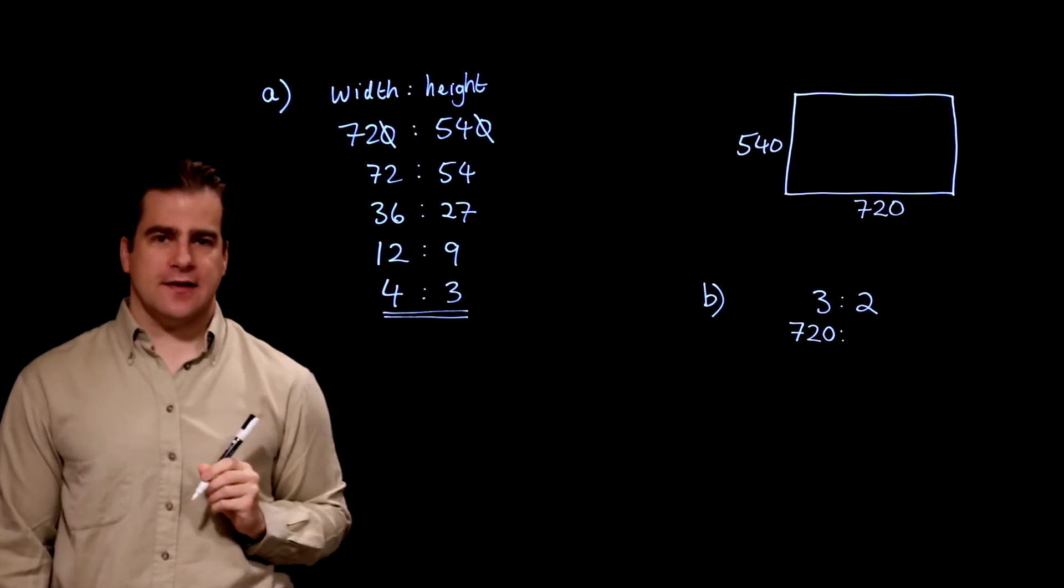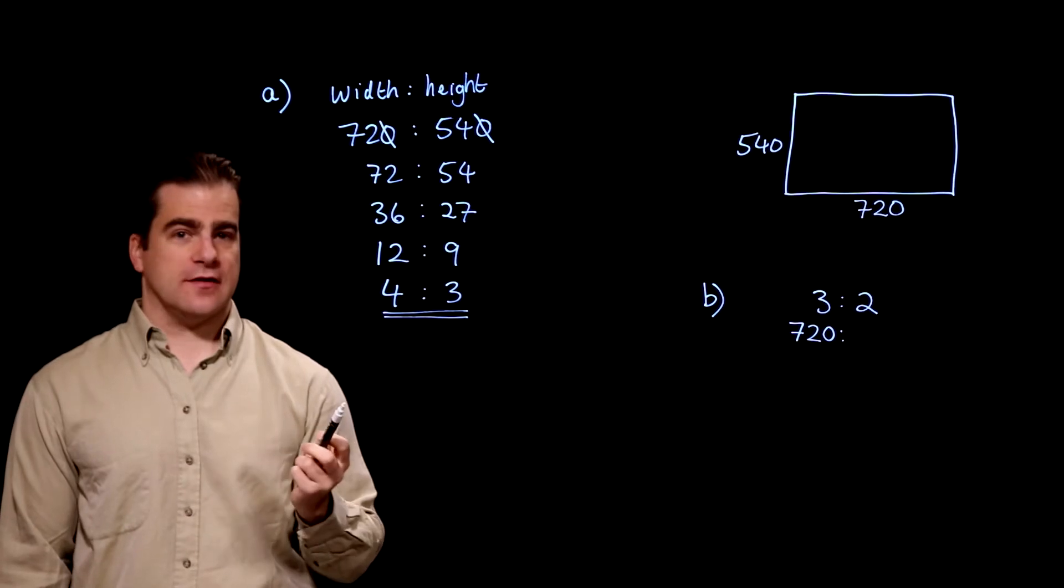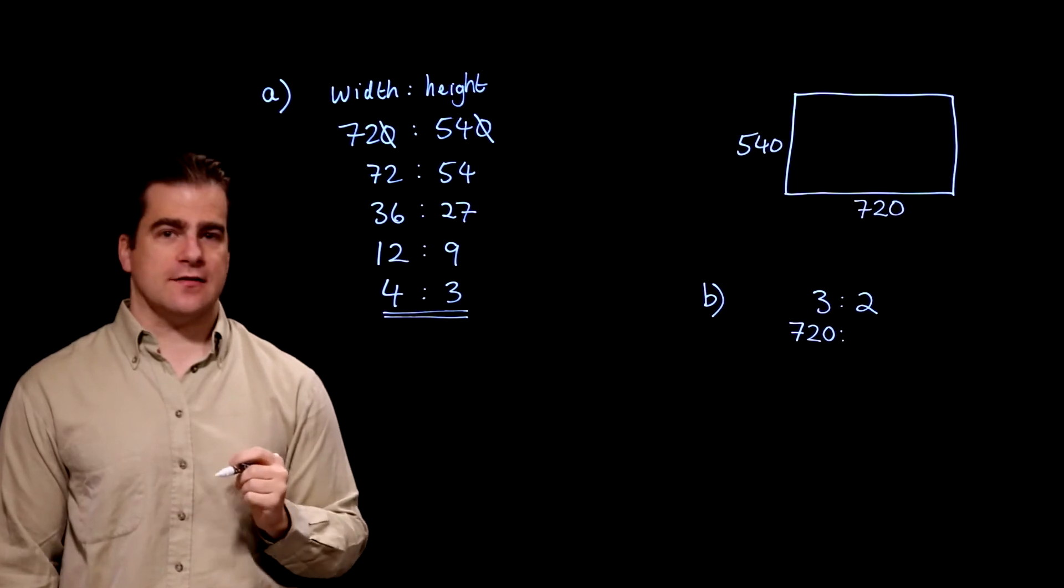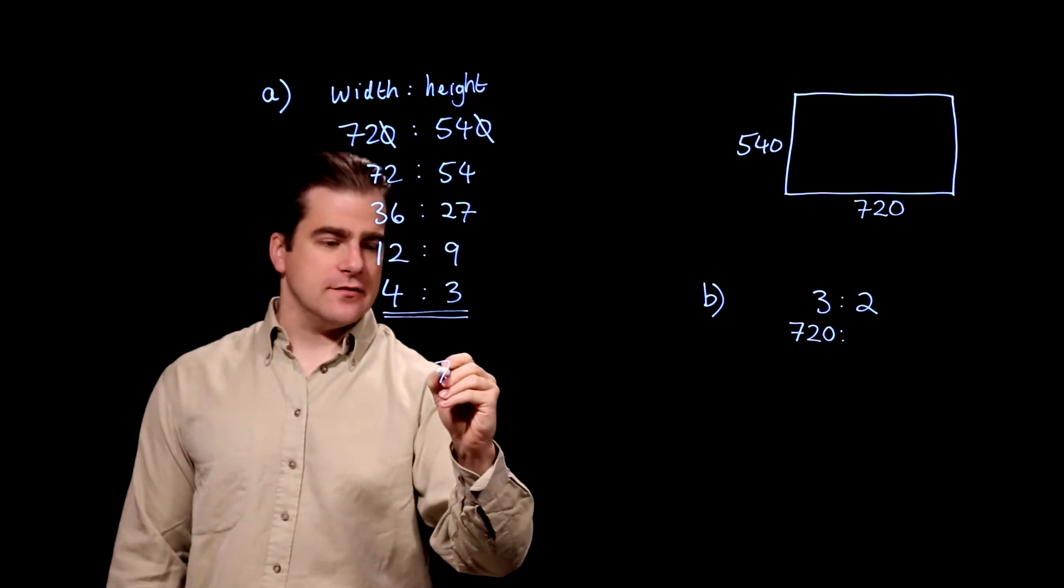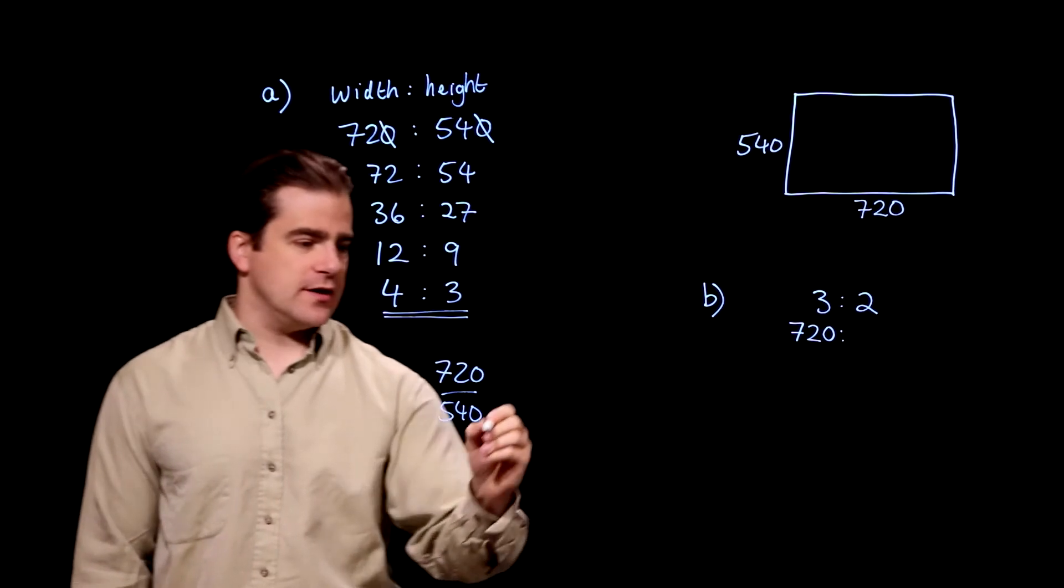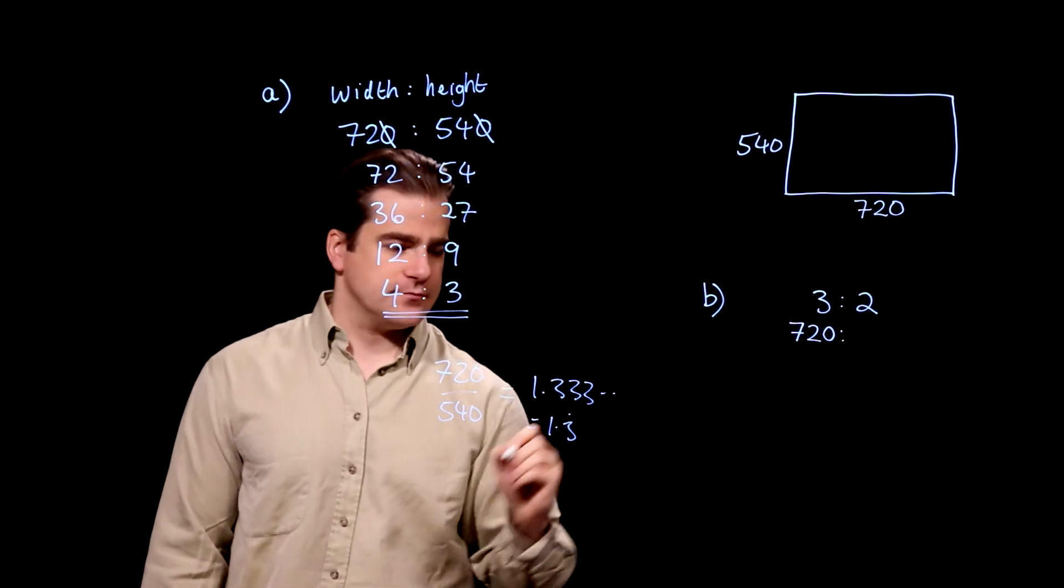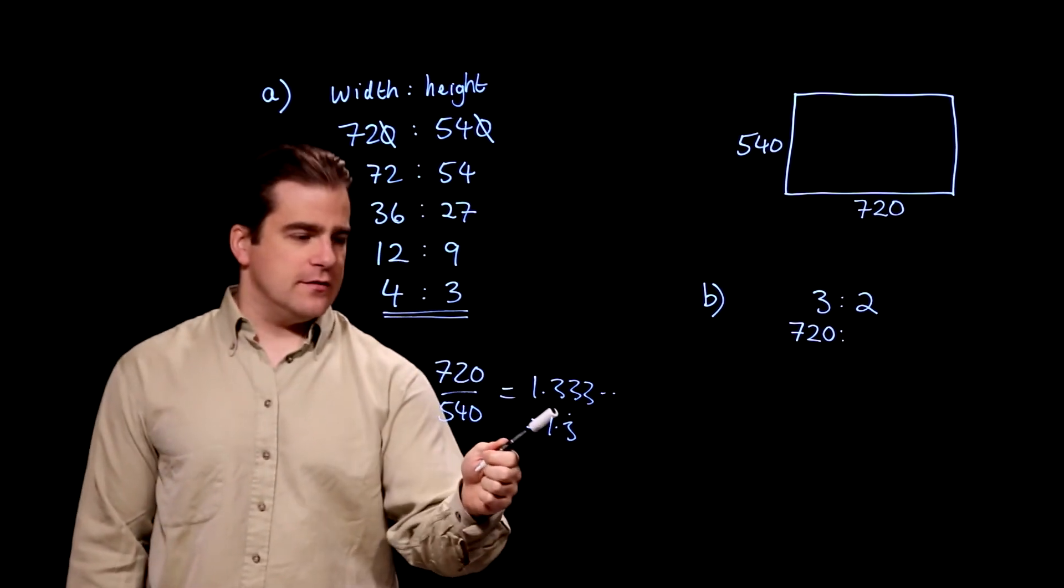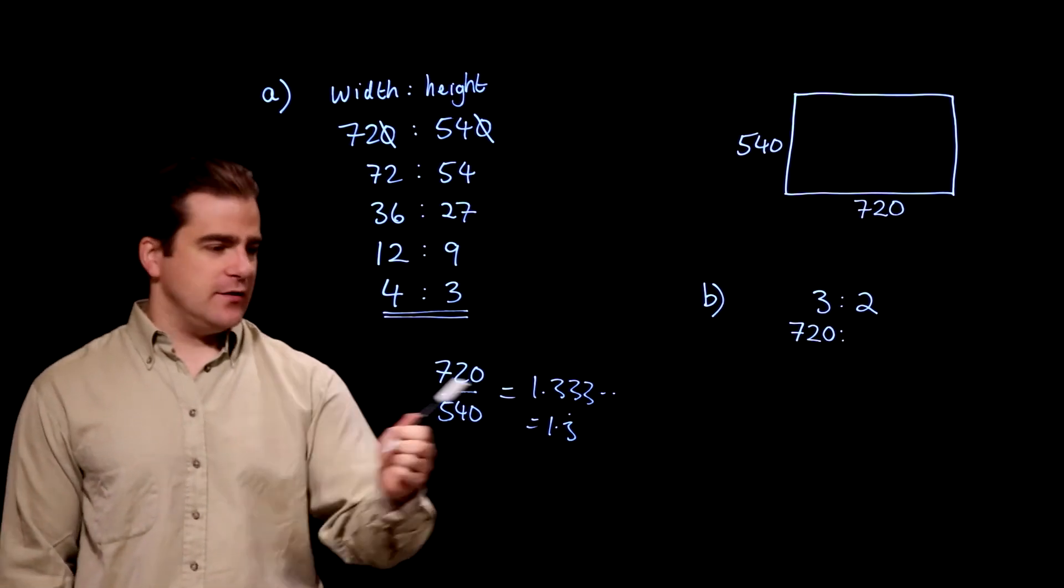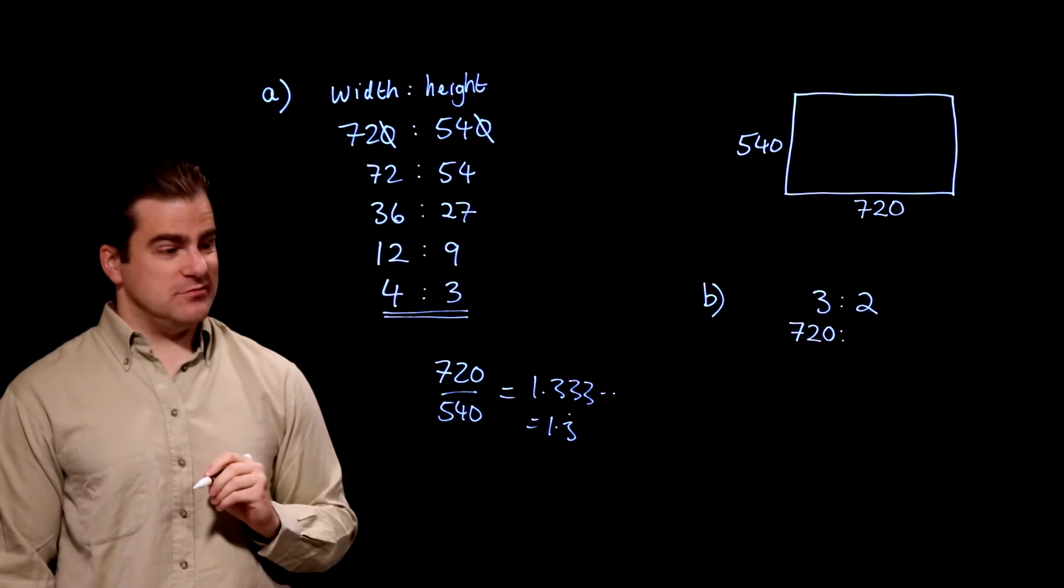Now, this is a calculator paper. So it might be tempting, and you can try this if you want, to simply divide 720 by 540. Put that in the calculator and see what you get. Well, you get, if you do 720 divided by 540, which is of course 4 divided by 3, you get 1.333, 1.3 recurring. Now, you see that in the exam. Is that very helpful? Can you go from 1.3 recurring to 4 to 3, which is the answer you have to give? Not quickly.